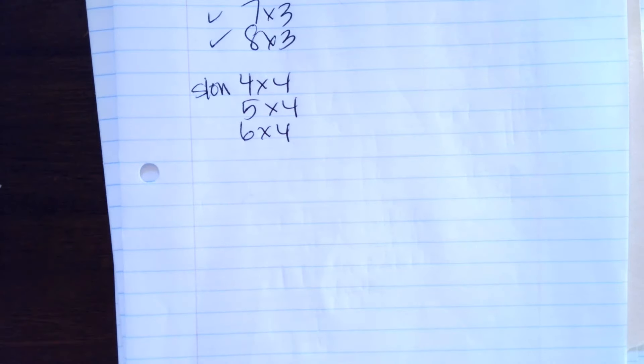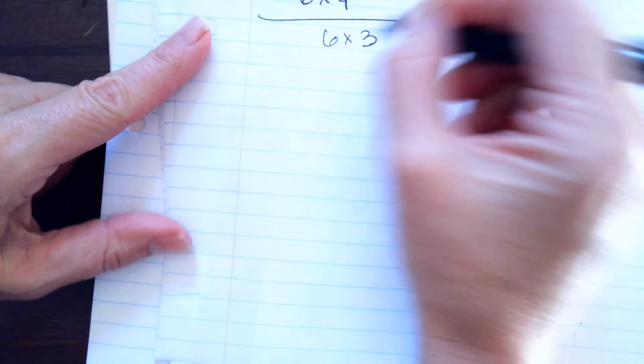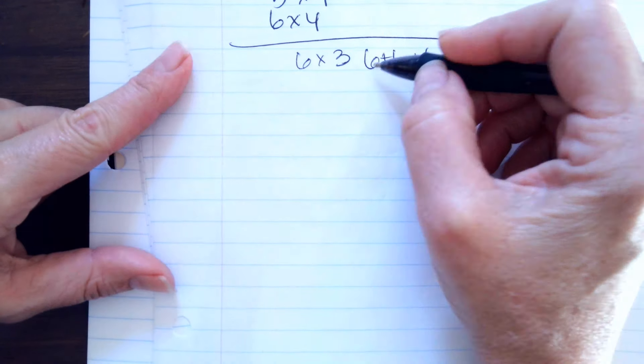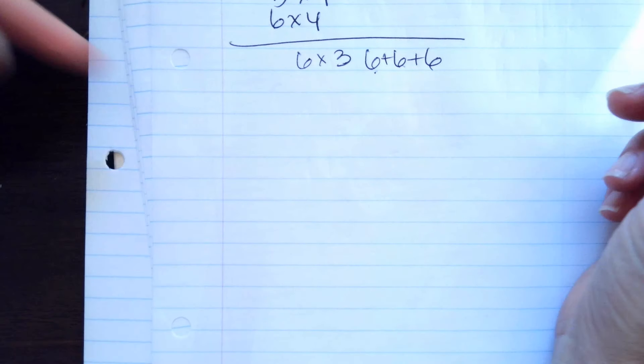And the strategies are going to help you a lot. So the first one is 6 times 3. We're basically going to go 6 plus 6 plus 6. So 6 plus 6 is 12 and 12 plus 6.